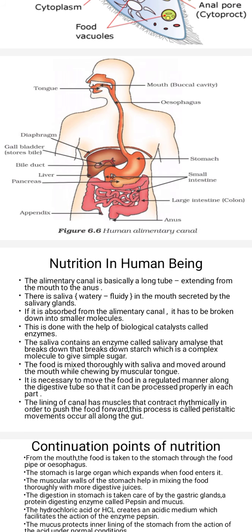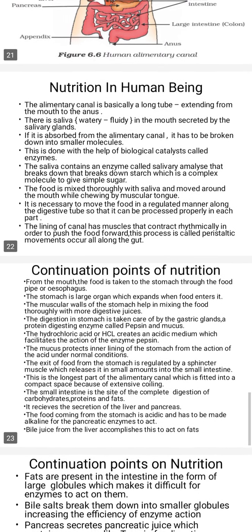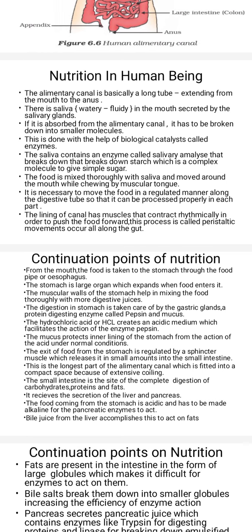Now we will see the human body. The human digestive system consists of a mouth that is the buccal cavity, next is the oesophagus, then the stomach, gallbladder also known as the bile store, bile duct, liver, pancreas, small intestine, and large intestine.